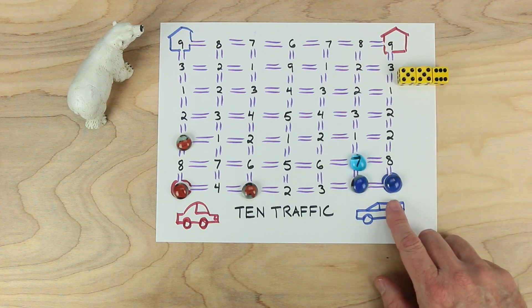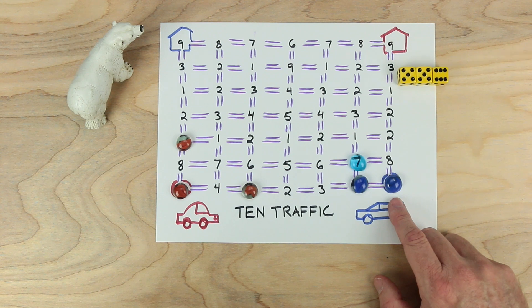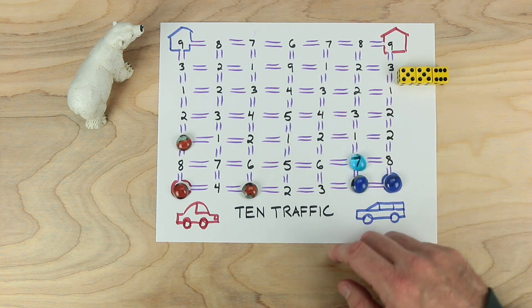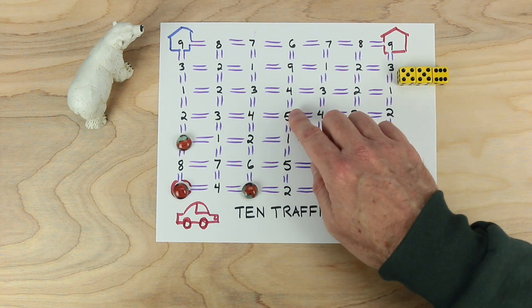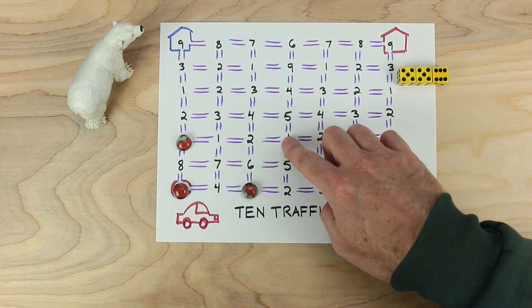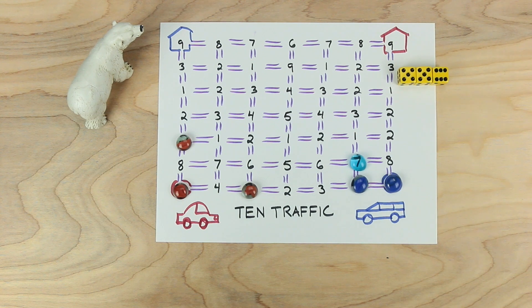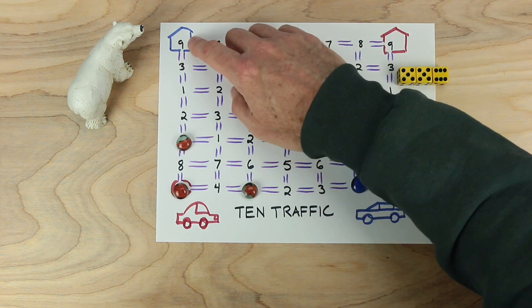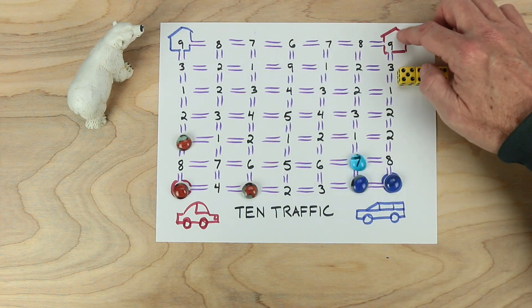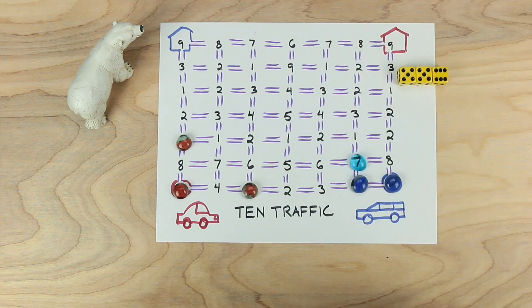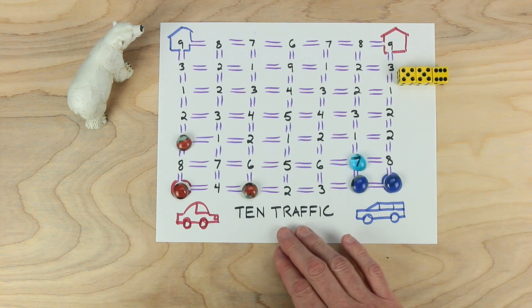Now a couple rules. Only one piece can be on any spot, and no piece can move through another piece. So if blue had a piece here and red was coming along, red would have to go around because that's what traffic is. Each player is trying to get all of their cars home, and the first player to get all their cars home will be the winner. This is the game Ten Traffic.